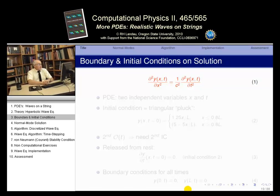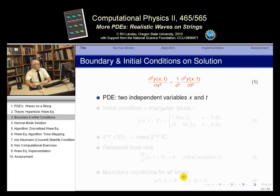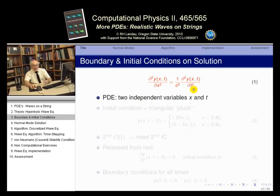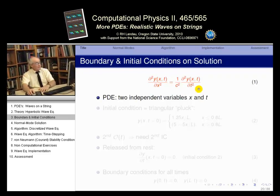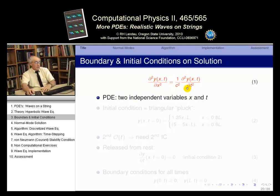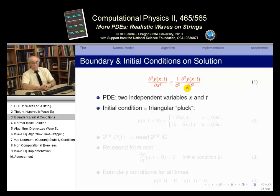Equation 1 is the wave equation. It's obviously a partial differential equation: Y depends on x and t, two independent variables. It's also a second-order equation, so we need two pieces of information — two conditions — in order to solve it.